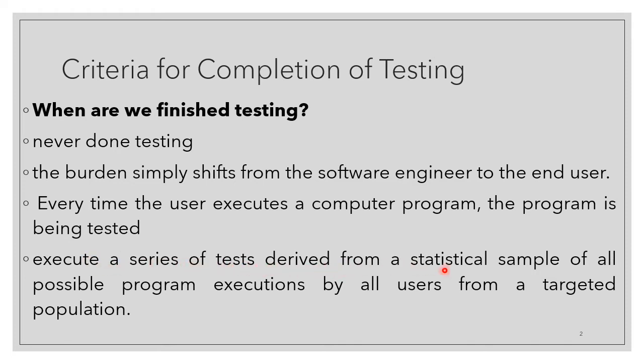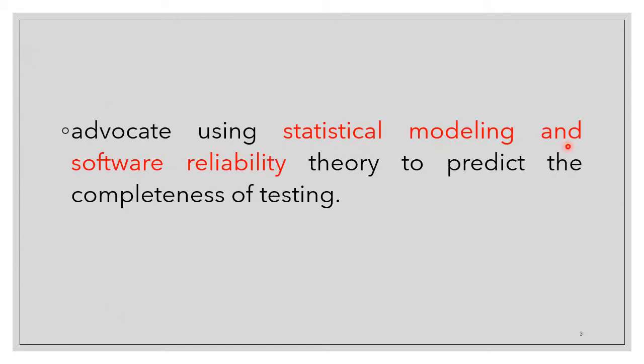Execute a series of tests derived from a statistical sample of all possible program executions by all users from a targeted population. We cannot say there is a definitive criteria for completion of testing. Advocate using statistical modeling and software reliability theory to predict the completeness of testing. By using statistical modeling techniques, we find that software is reliable, reliability theory is satisfied, and we have completed testing.